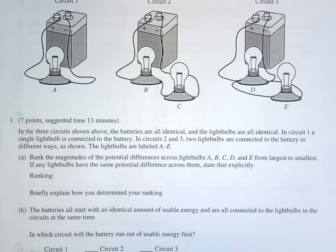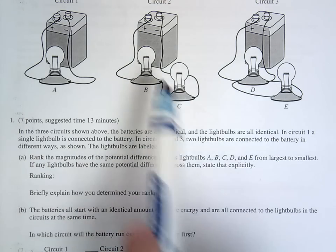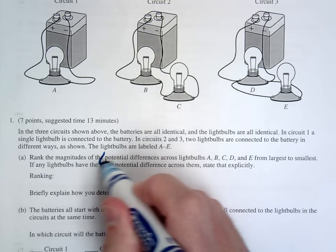This is the 2017 FRQ AP Physics 1 question number one. In this question we have some light bulbs here and the first question is basically asking which ones have the greatest potential difference.